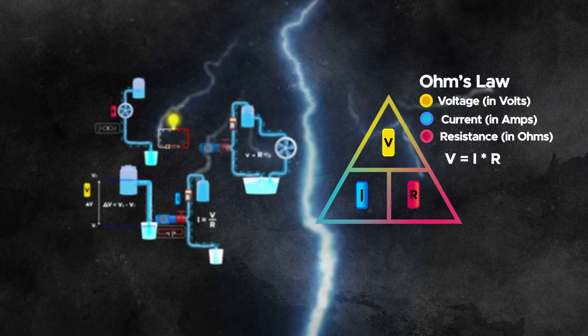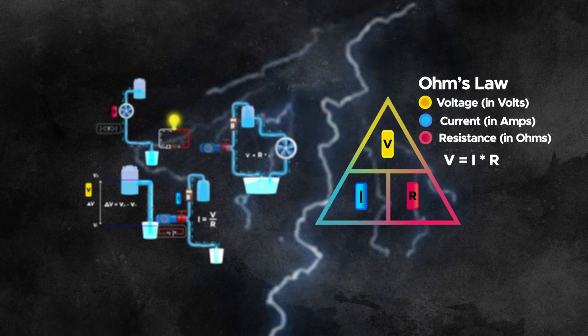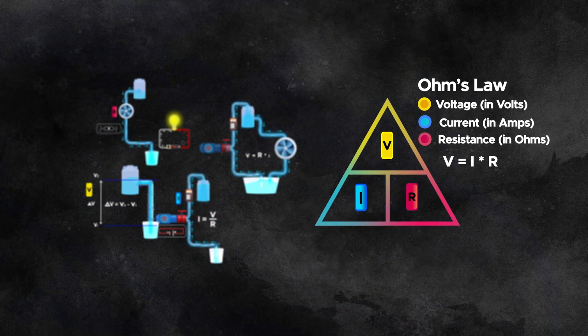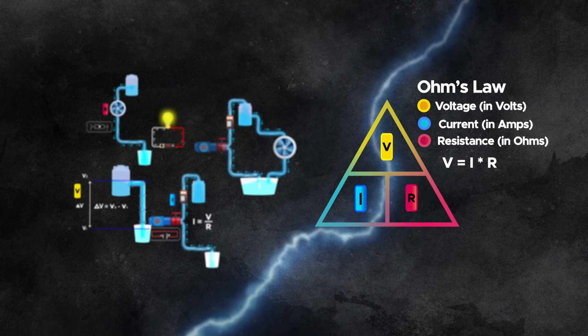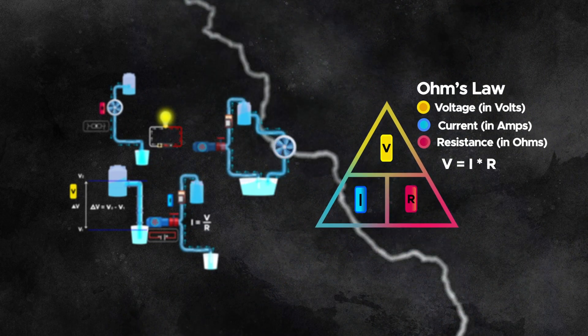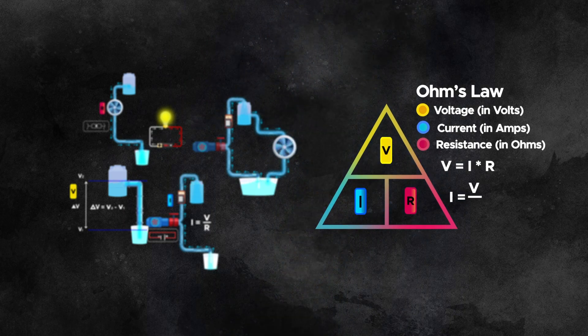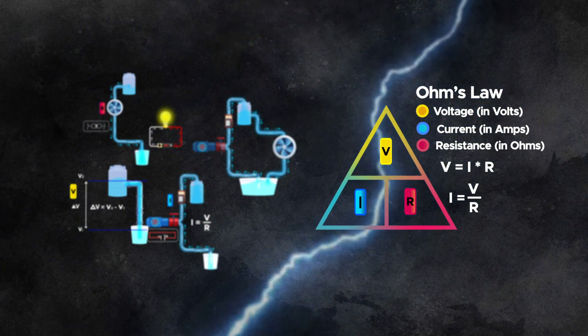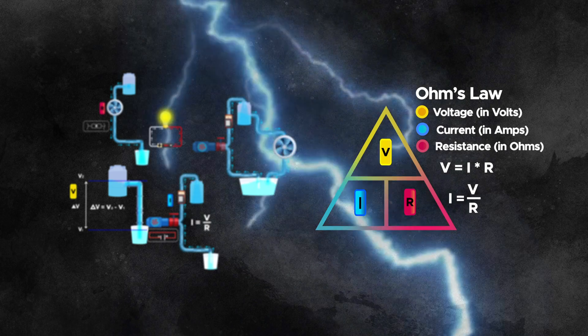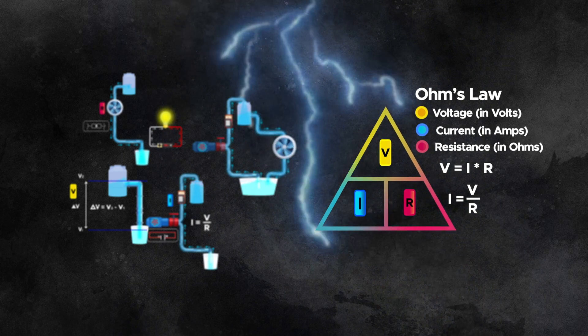First, the voltage is equal to the current times the resistance as shown in the first equation. This means that the current flowing through a conductor is directly proportional to the voltage applied across it. In the second equation expression, the current is equal to the voltage divided by the resistance. This equation arrangement expresses the inversely proportional relationship between the current to the resistance of the conductor.